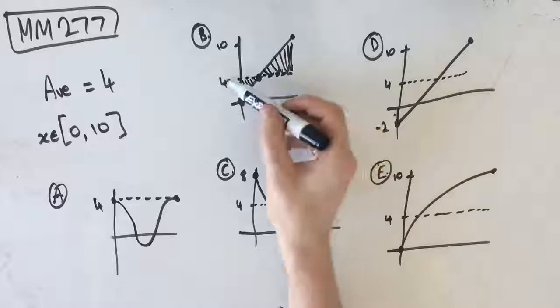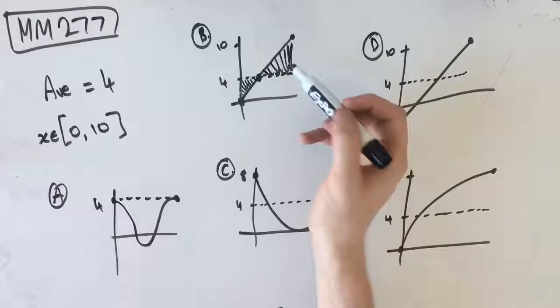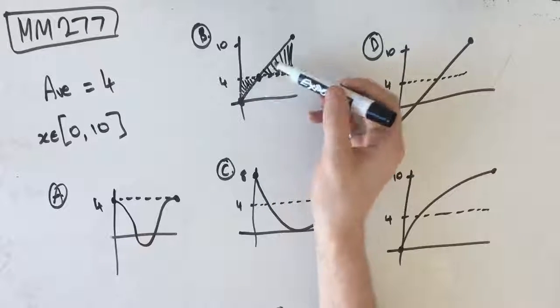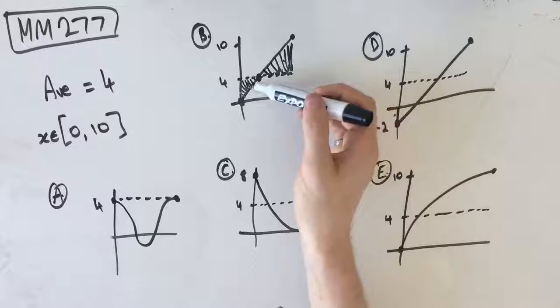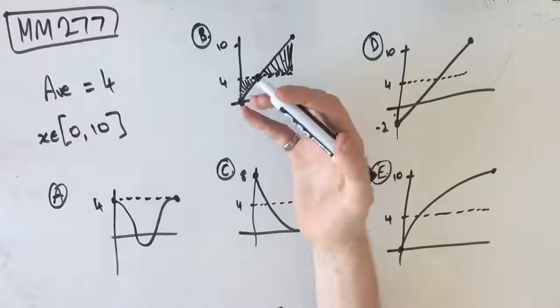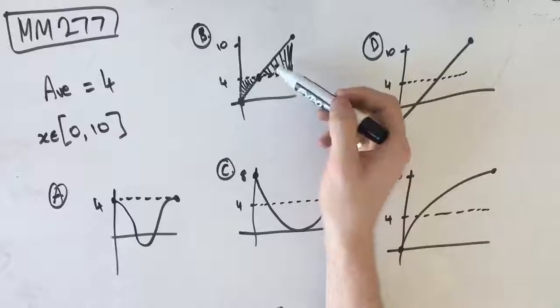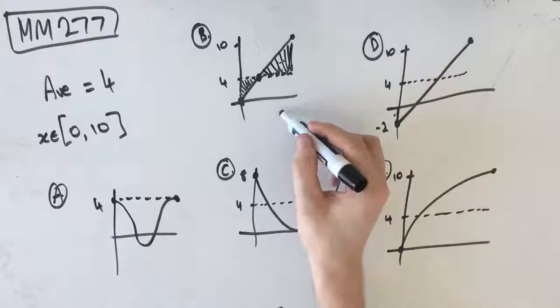So at our split point, which is 4 in this case because our average value is 4, we have to look and say, is this area the same as this? And if it is, then that's our average value. If it's not, it's not our average value. This triangle is much smaller than this one, so B is not going to be our answer.